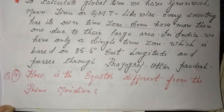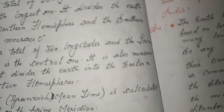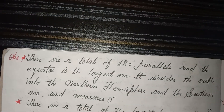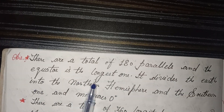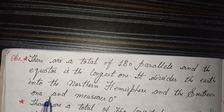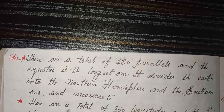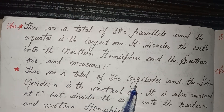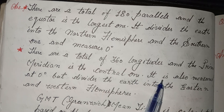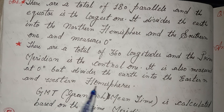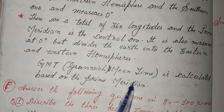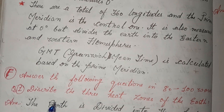Fourth: how is the equator different from the prime meridian? Answer: there are a total of 180 parallels and the equator is the longest one. It divides the earth into the northern hemisphere and the southern hemisphere and measures 0 degrees. There are a total of 360 longitudes and the prime meridian is the central one, also measured at 0 degrees, but it divides the earth into the eastern and western hemispheres. GMT is calculated based on the prime meridian.